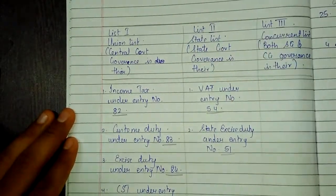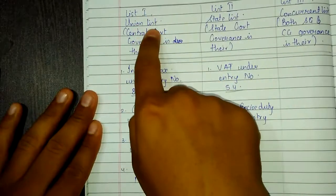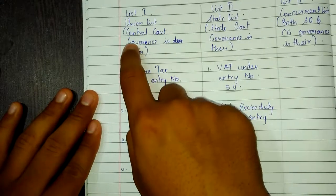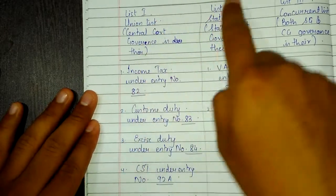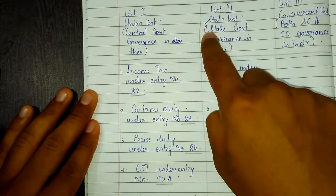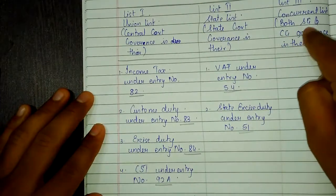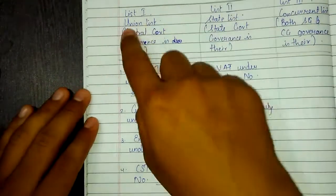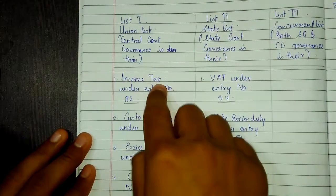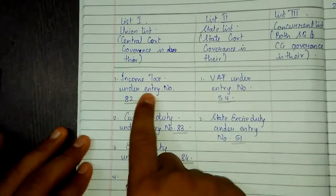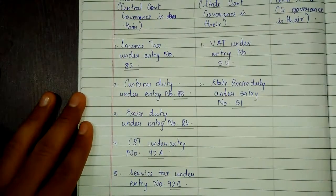You should know under which list which items come — which chapters fall under which list. List 1 is the Union List: Union List is a central government list; central government governance is there. List 2 is the State List: state government governance is there. List 3 is the Concurrent List: both central government and state government governance is there. Under List 1 — the Union List — income tax falls under entry number 82. These entry numbers are important because you should know them; this is general knowledge.